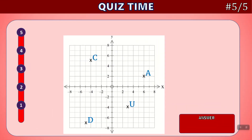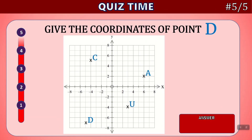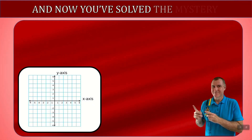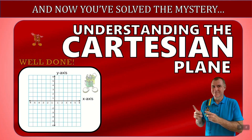Last question. Give the coordinates of point D. Time's up. We can see that D is in quadrant three, where both x and y values are negative. So the answer is minus five comma minus seven. Here's D — if we go to the x-axis, between minus four and minus six is minus five. And if we go to the y-axis, between minus six and minus eight is minus seven. And now you've solved the mystery of understanding the Cartesian plane. Well done.